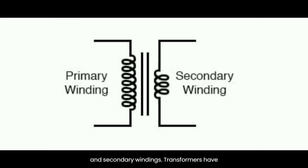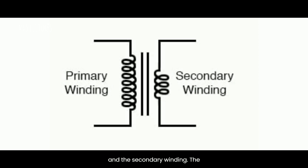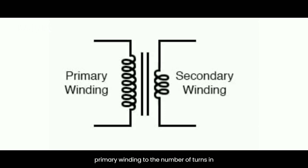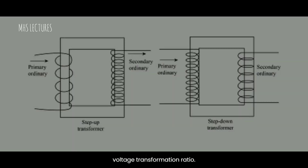Primary and Secondary Windings: Transformers have two sets of windings — the primary winding and the secondary winding. The primary winding receives the input voltage, while the secondary winding delivers the output voltage. The ratio of the number of turns in the primary winding to the number of turns in the secondary winding determines the voltage transformation ratio.